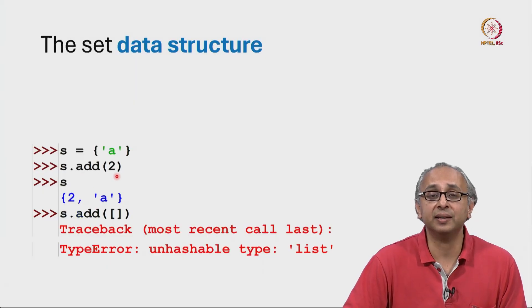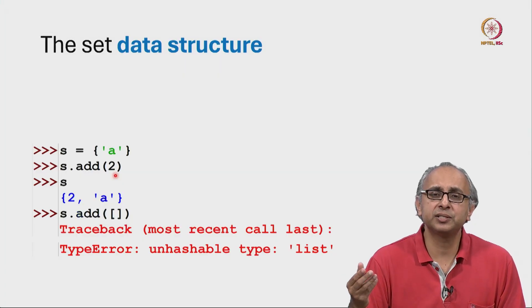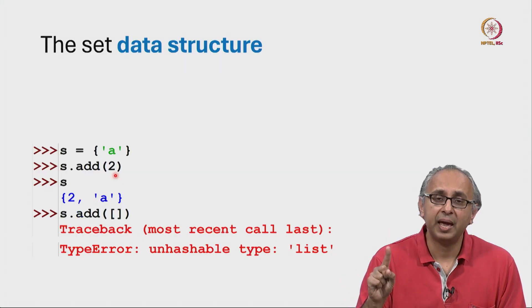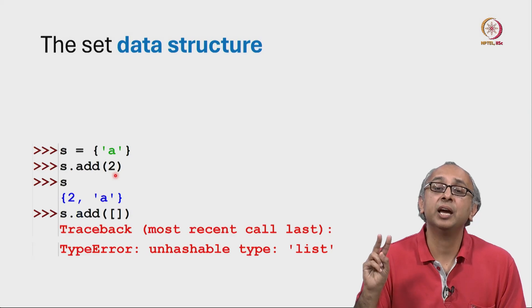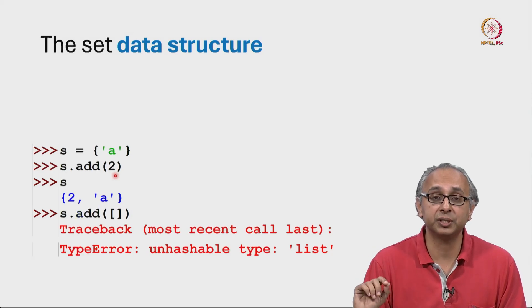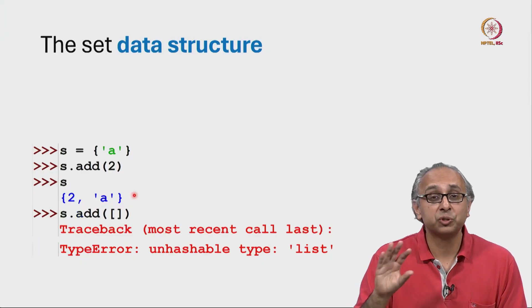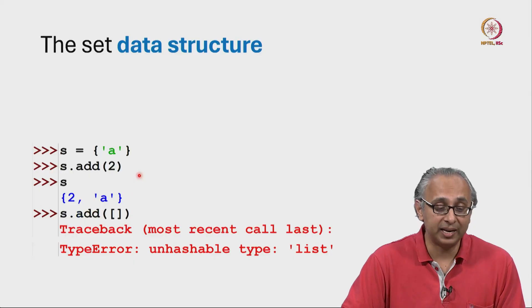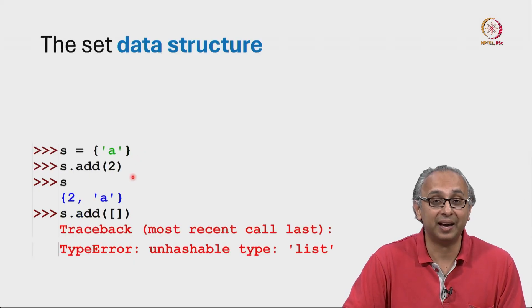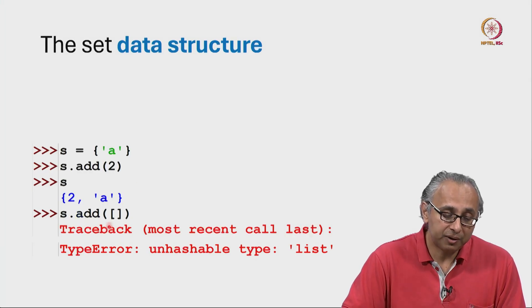So similar to lists, sets are mutable and they can be heterogeneous. They can contain items of different types. If I now ask what does S contain, it says it contains both the integer 2 as well as the string A. Notice that sets are unordered. So there is no guarantee about the order in which items appear. They need not correspond to the order in which you added the items to the set. Now here I try to add a list to this set and I get an error message.